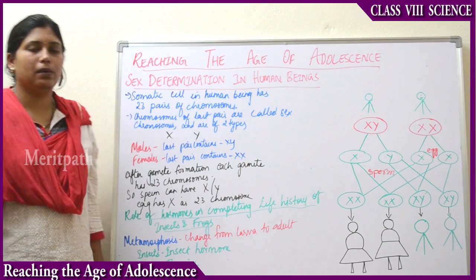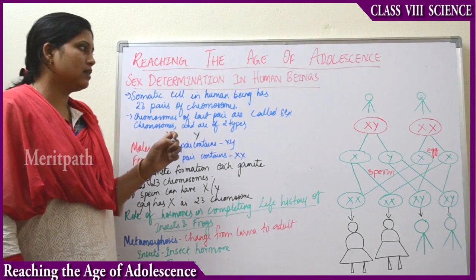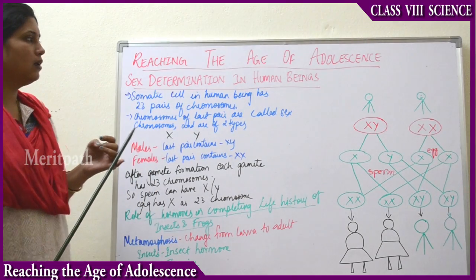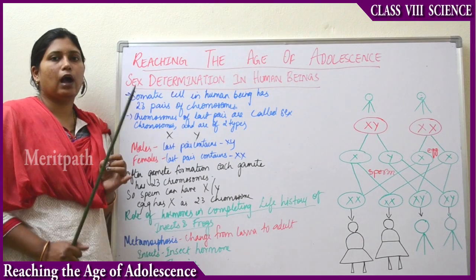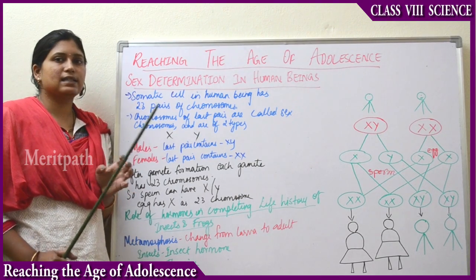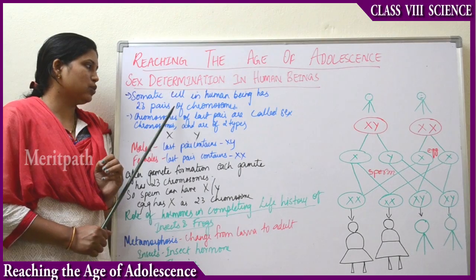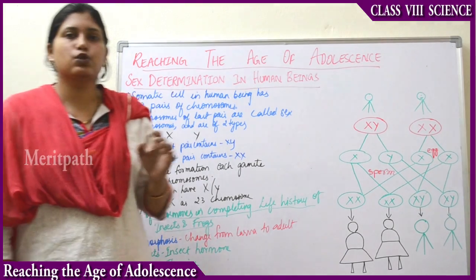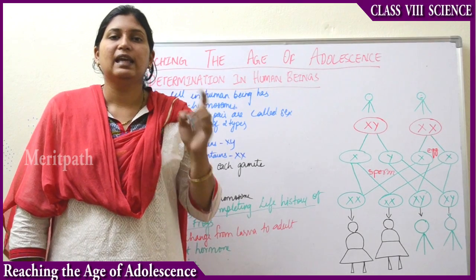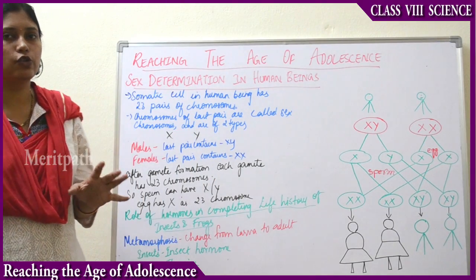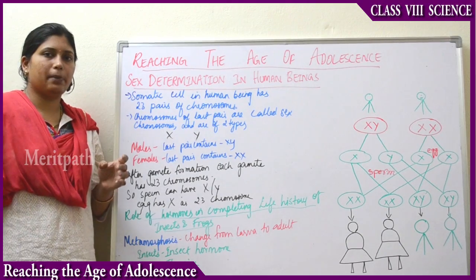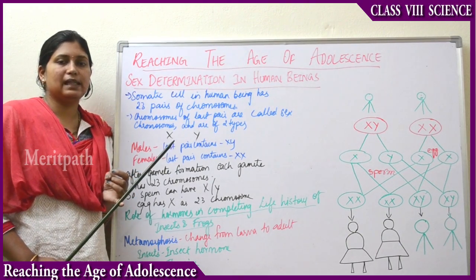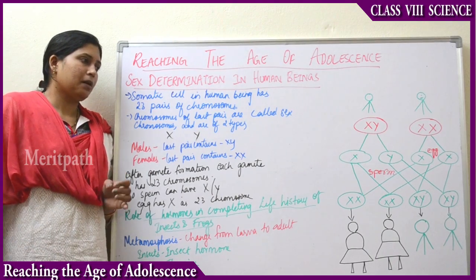Next is sex determination in human beings. How is the sex of the baby determined — whether it is a boy or a girl? Somatic cells in human beings have 23 pairs of chromosomes. Every human being has 23 pairs of chromosomes in each cell. Out of these 23 pairs, 22 pairs are the same in both males and females, but the remaining one pair is different.